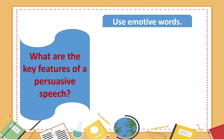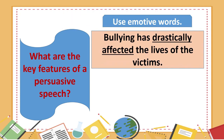Number 5: Use emotive words. Emotive language means using specific word choices to evoke an emotional reaction from the reader. Examples are adjectives, abstract nouns, verbs, and adverbs. For example, bullying has drastically affected the lives of the victims.